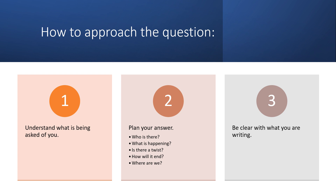How to approach the question: understand what is being asked of you. There are two style questions that can come up for the creative writing element — a topical one, and being asked to write a story based around an image that you are shown. With the topic one, that could be a story, a set of instructions, a diary entry, or a letter. So you need to understand what you need to write in order to plan your answer.